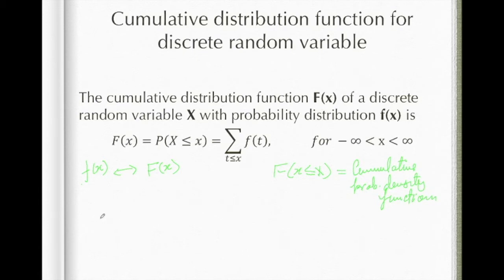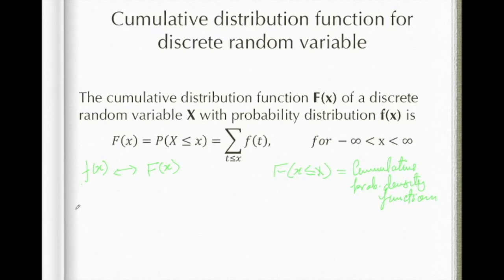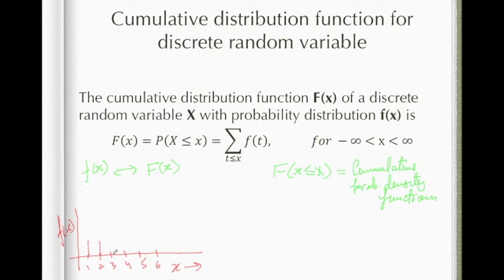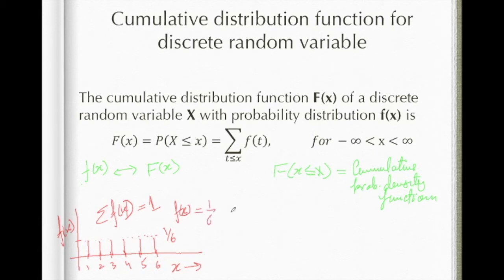For a particular probability distribution, let's take the same example of tossing a dice with six possibilities: one, two, three, four, five, and six for the values of x. The probability distribution has one by six for each value. The sum of all f(x) values equals one, and f(x) is nothing but equal to one by six for each outcome.